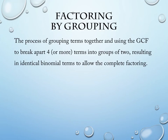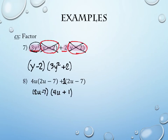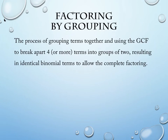The reason for showing parentheses-as-GCF examples is because of factoring by grouping. Factoring by grouping is the process of grouping terms together using greatest common factors to break apart four or more terms into groups of two. It results in identical binomial terms that allow us to completely factor. This technique is typically used for expressions with four terms.